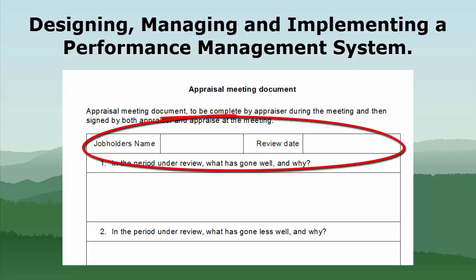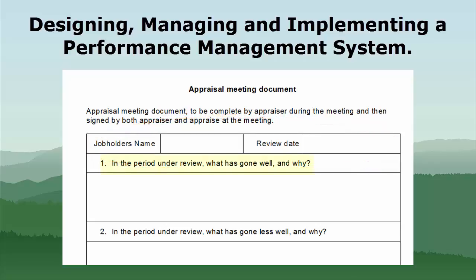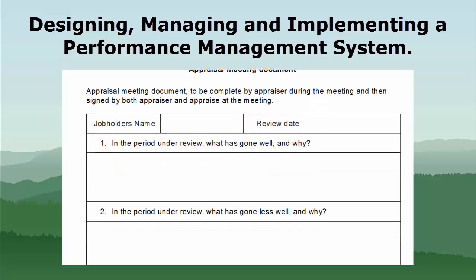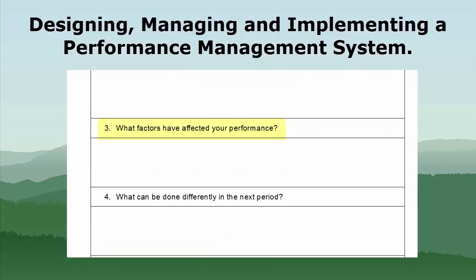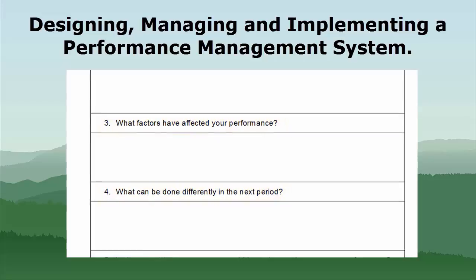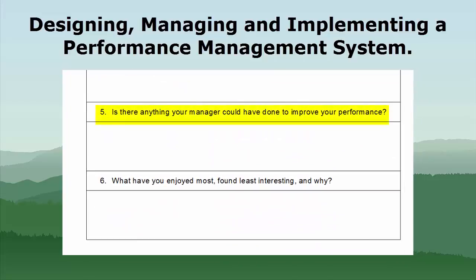So again, the job holder's name and the review date. And then a summary of, in the period under review, what's gone well and why — this is a summary, not a record of everything that was said, just a summary. And in the period under review, what's gone less well and why — again, just record the summary. What factors have affected performance and what can be done differently in the next period — again, summarising the outcome. The conversation may have taken a long time and hopefully some decisions were reached; this is a record of the decisions that have been reached.